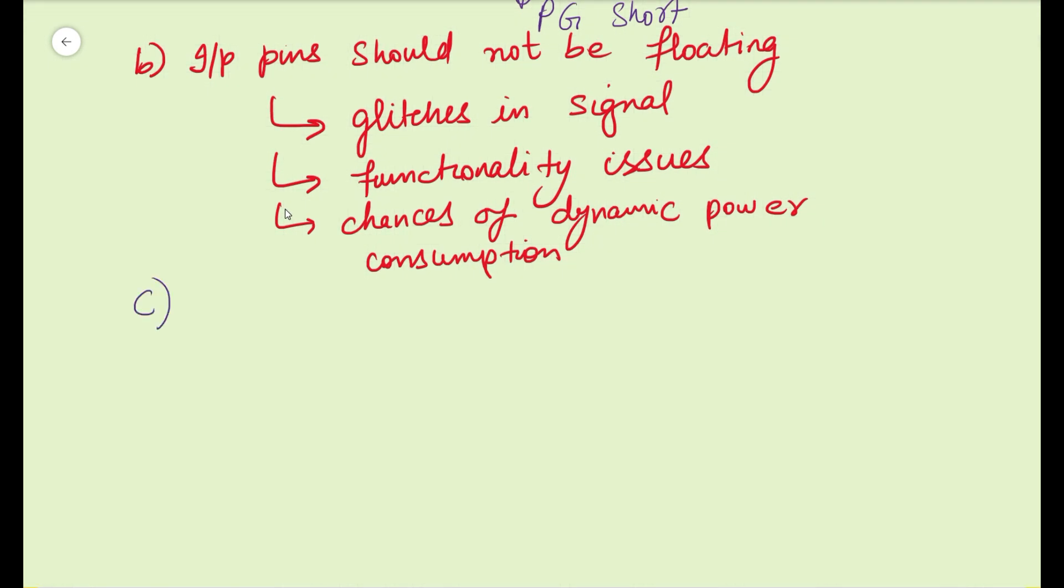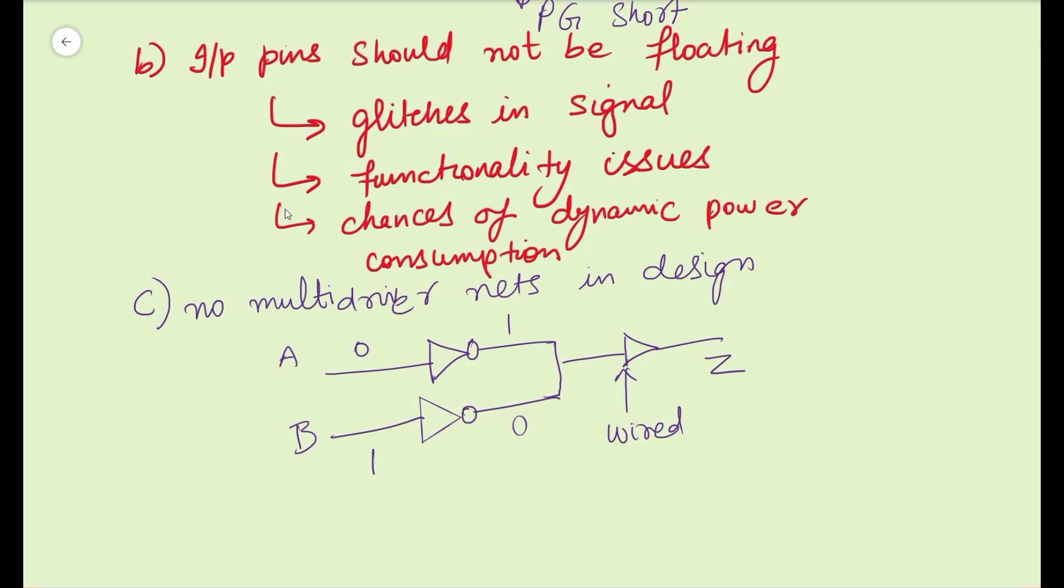The next sanity check is there should not be any multi-driver nets in the design. Let's take an example where there are two inverters driven by signals A and B, and both outputs are connected to a common buffer input. If A is zero and B is one, the inverters give outputs as one and zero respectively. Because of wired AND at the buffer input, the output will be ambiguous. Hence there should not be any multi-driven inputs.